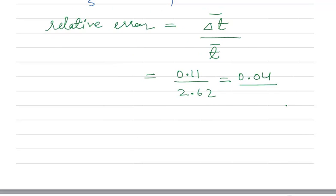If you calculate this, 0.04. So, this is the relative error and percentage relative error is 4%. If you multiply relative error with 100, you will get percentage relative error as 4%.